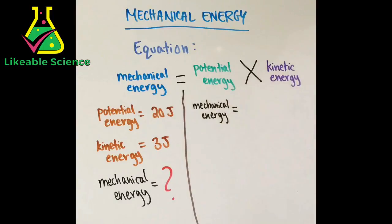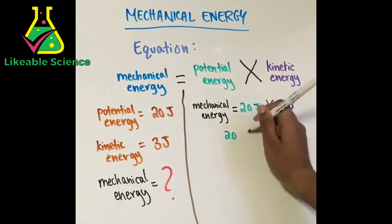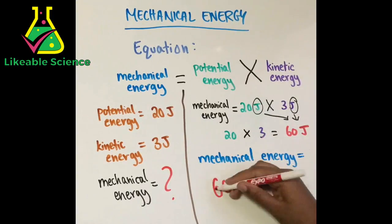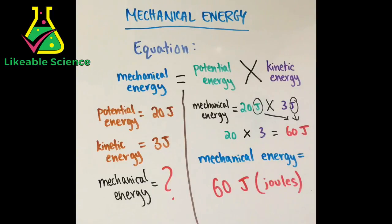Let's solve for this and plug our numbers in. We get mechanical energy equals 20 joules times 3 joules. 20 times 3 is 60 and we bring down the unit which is joules. So the answer is mechanical energy equals 60 joules.